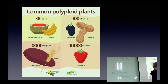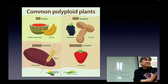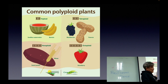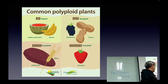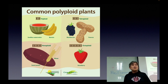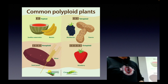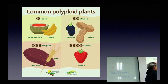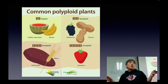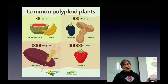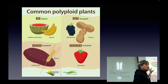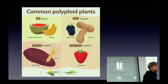Bananas are also triploid, so they cannot really bear viable seed — impossible. Some sweet potatoes are even hexaploid — a huge duplication of chromosomes. Bottom line: most of the plants we enjoy today are polyploid, and because of that polyploidy, those fruits are bigger.